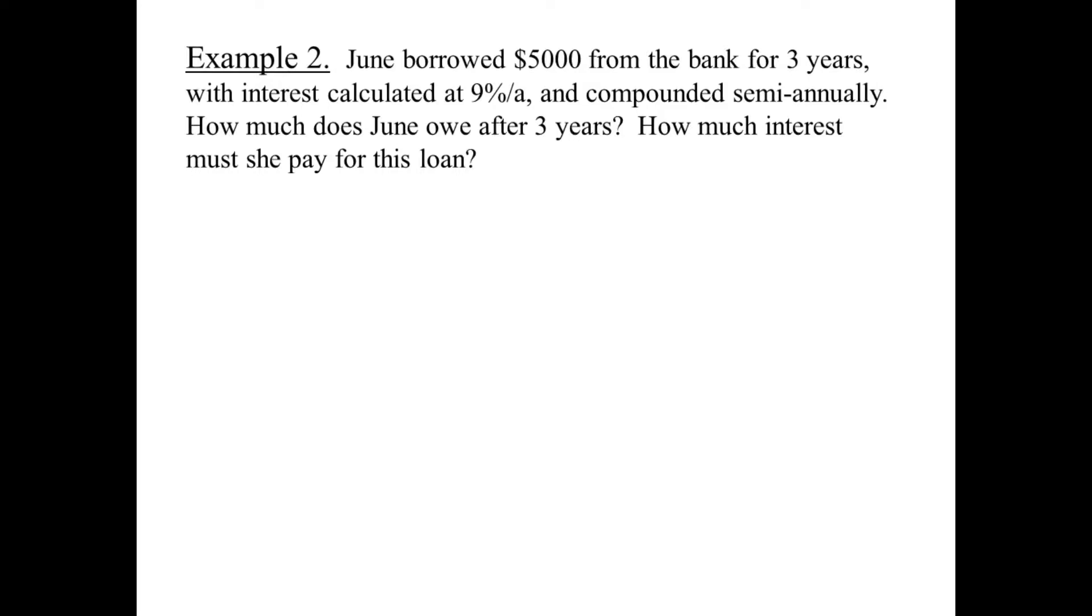One reads this question and sees these words: Compounded interest. Compounded semi-annually. As soon as you see compounded, you know you're going to need this formula. And all we have to do is figure out the A, the P, the I, and the N. Well, she borrowed 5 grand. So the principal must be 5,000. Next, we need the I value. To figure out the I value, we know that it's the annual rate, which is 0.09, divided by the number in a year, which is 2. So it'll be 0.09 divided by 2.